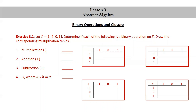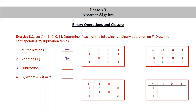The first one is multiplication. Looking at the table, all of the outputs are 0s, 1s, and negative 1s. So yes, multiplication is a binary operation on the set S consisting of negative 1, 0, and 1. Next, addition: the table shows a 2 and a negative 2, both of which cause a problem, so the answer is no. Addition is not a binary operation on this S. Similarly, subtraction also has a 2 and a negative 2 in the table, so the answer is also no. Subtraction is not a binary operation on the set S consisting of negative 1, 0, and 1.